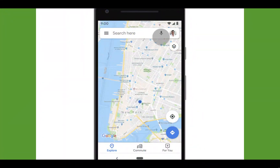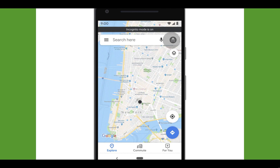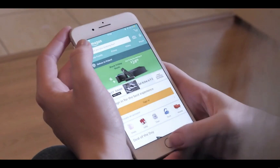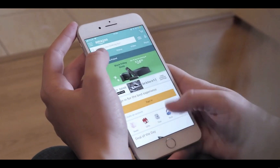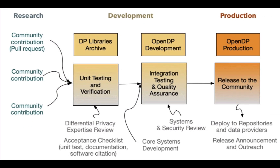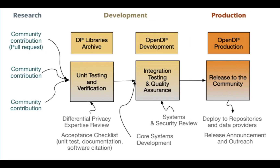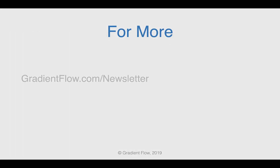Google uses Differential Privacy and other privacy-preserving techniques in mobile phones and many products. Apple has long used Differential Privacy in its products. Harvard is collaborating with Microsoft on the OpenDP initiative, which allows researchers to preserve privacy while fully analyzing datasets. See Gradient Flow Newsletter number 17 for more.